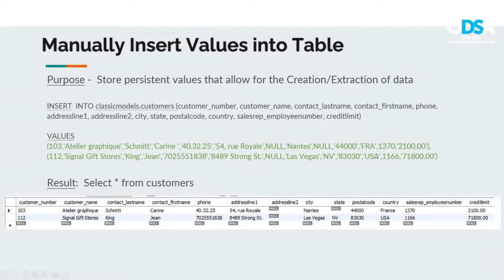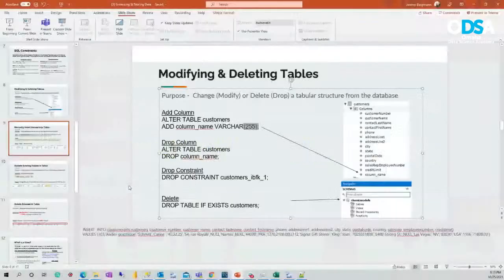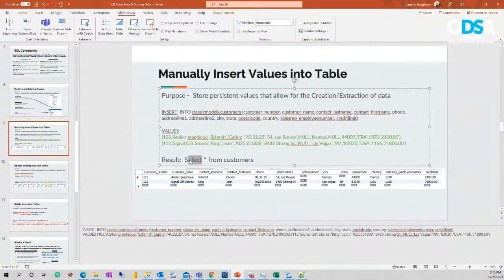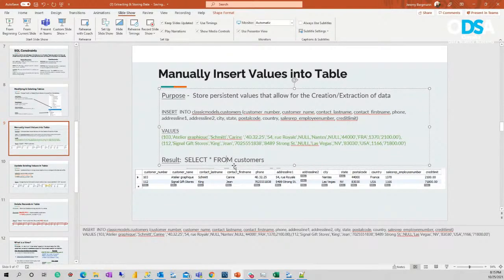For example, going left to right: customer number 103, customer name 'At Layer Graphique', contact last name Schmidt, contact first name Carney, phone, address, and so on down to credit limit. Each row of values is called a tuple. You separate multiple rows with commas. Run the full INSERT INTO statement including the values, and to check the result, run a SELECT * FROM customers.